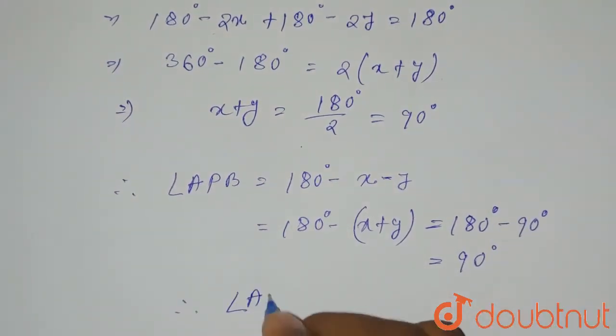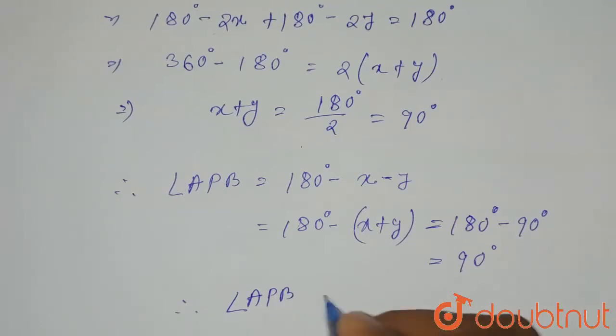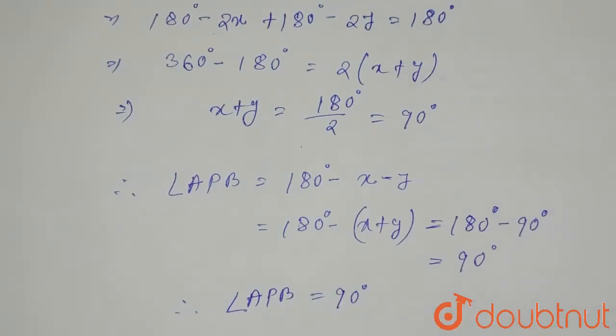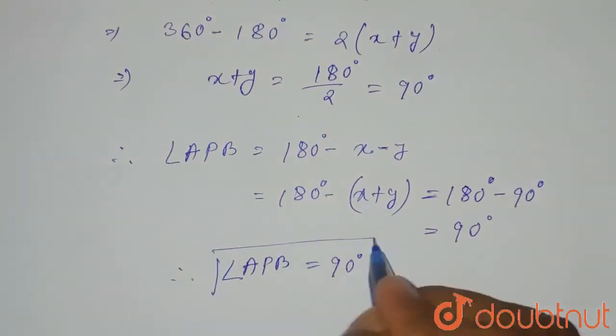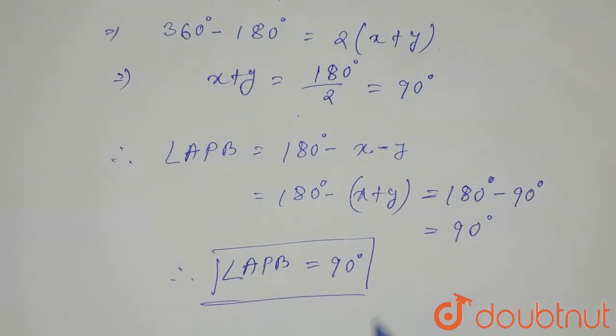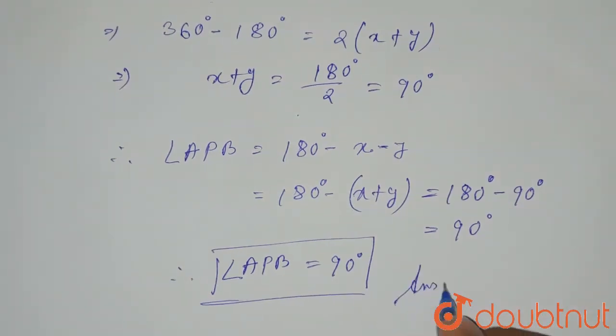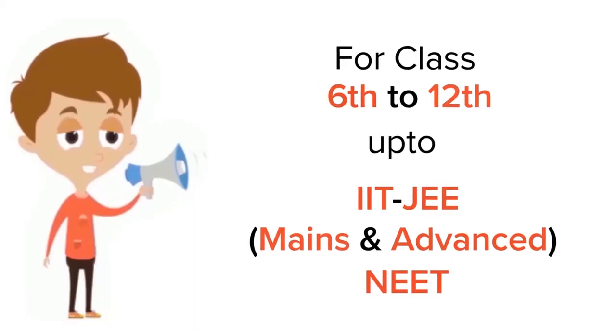Therefore, angle APB equals 90 degrees. This is the required solution. Thank you. For class 6 to 12, IIT JEE, and NEET level, trusted by more than five crore students — download DoubtNet today.